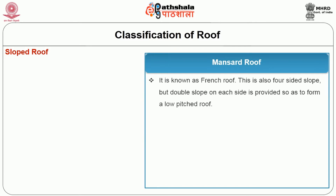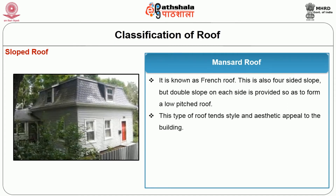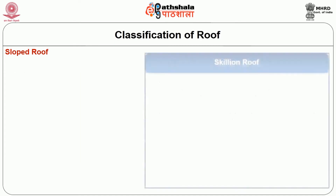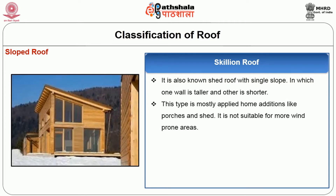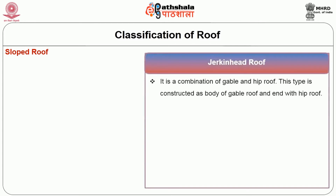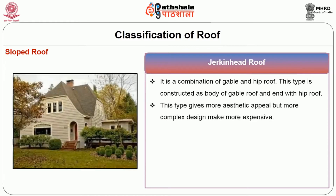The mansard roof, also known as a French roof, is a four-sided slope with a double slope on each side so as to form a low-pitched roof. This type of roof adds style and aesthetic appeal to the building. The skillion roof, also known as a shed roof, has a single slope in which one wall is taller and the other is shorter. It is mostly applied for home additions like porches and sheds, and is not suitable for wind-prone areas. The jerkin head roof is a combination of gable and hip roof — constructed as the body of a gable roof ending with a hip roof. This type gives more aesthetic appeal, but the complex design makes it more expensive.